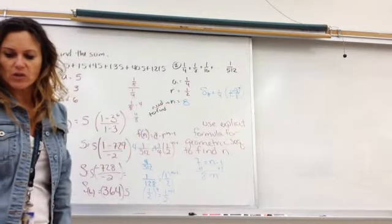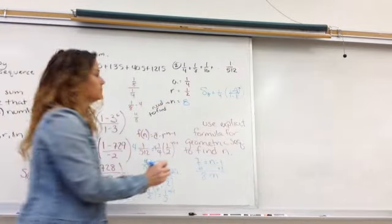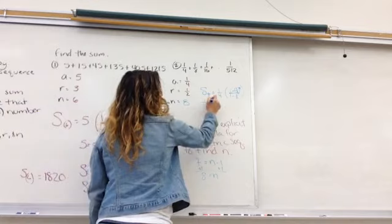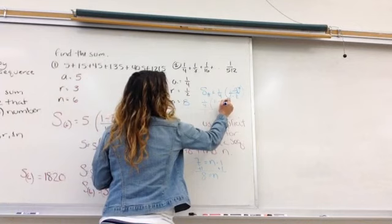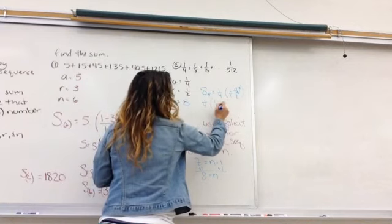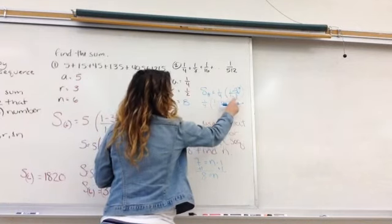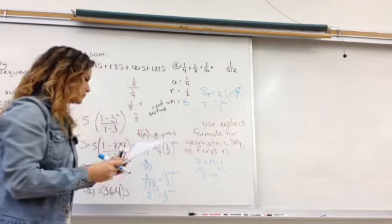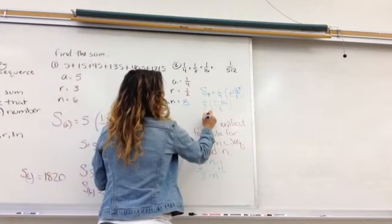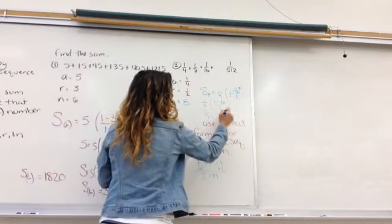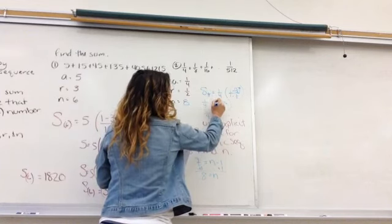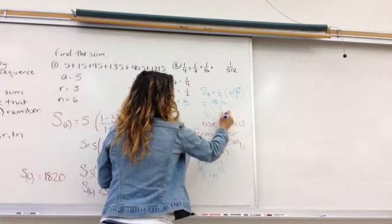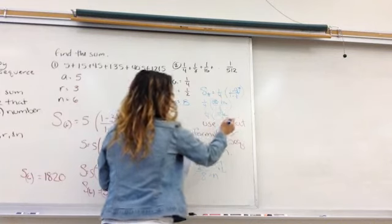So from here, you're going to be punching a lot of things into your calculator. So we get 1/4 times 1 minus 1 over 256 over 1 half. 1 minus 1 half is 1 half. So up here, we get 1/4 times, let's see, on that top. This is 256 over 256. So I get 255 over 256 divided by 1 half.